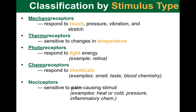The last type to mention is nociception — this is sensing pain-causing stimuli. It is very important, as pain is a warning signal of potential or ongoing tissue damage, and our body definitely wants to register and act on it, whether it is due to temperature, excessive force, chemicals, or any other reason. That is our list of five receptors based on the type of stimulus.